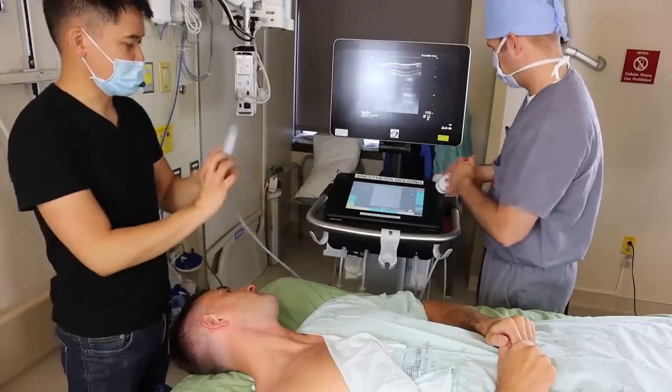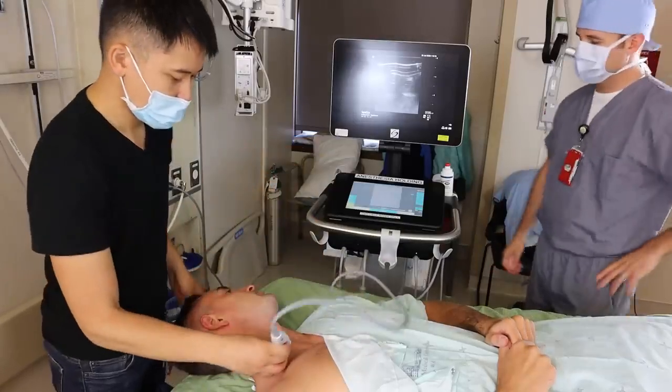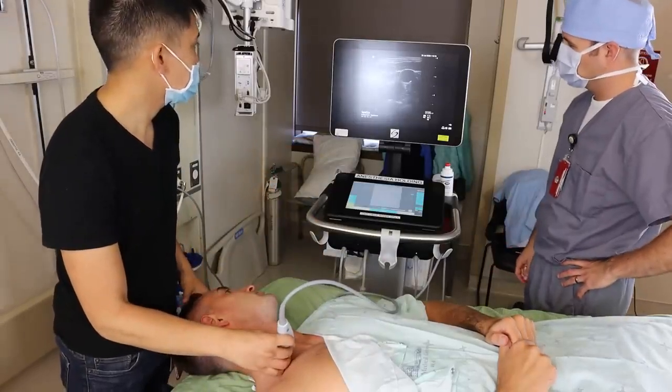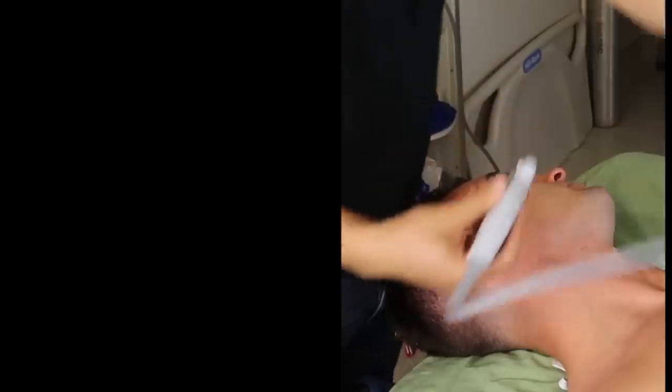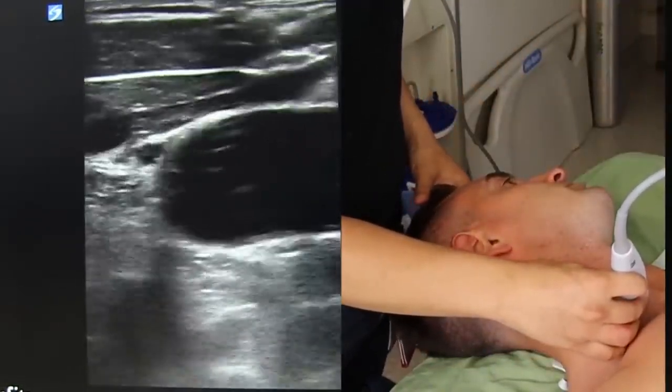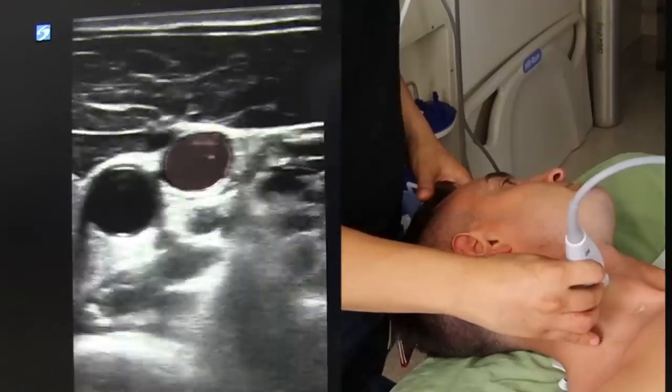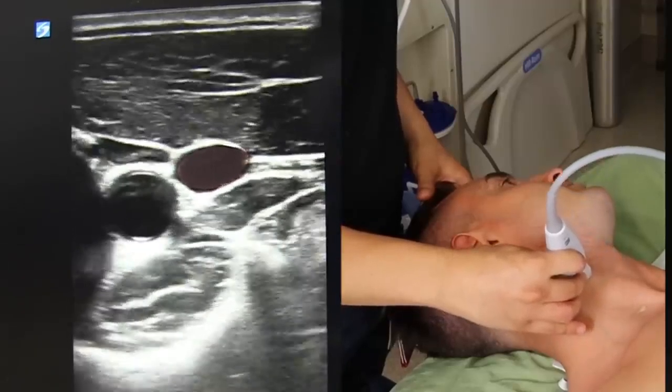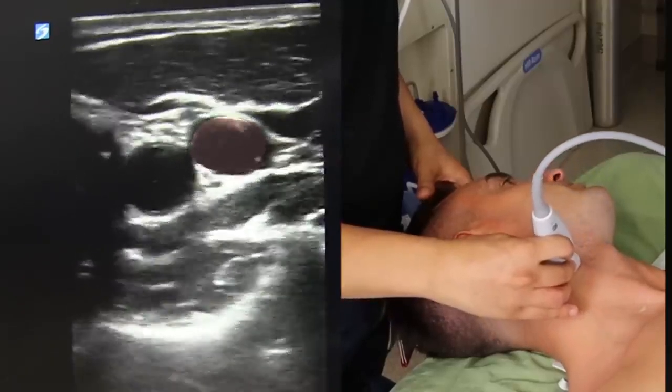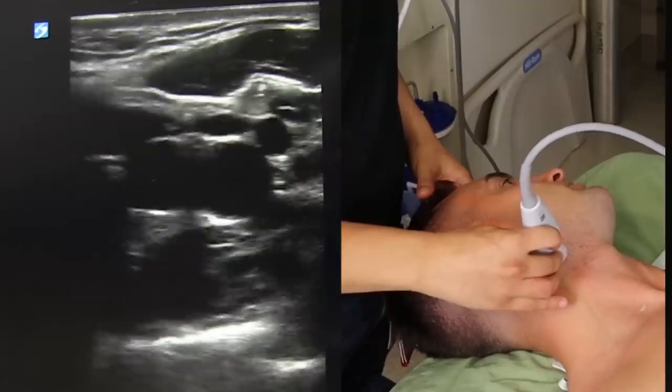Always look at the site under ultrasound before you drape to make sure it's suitable. This has saved me before from going after a vein that is thrombosed or has unfavorable anatomy. I start by tracing the jugular from as far inferior as I can and then up to the angle of the mandible so I can fully understand its course.